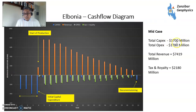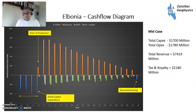So you have $1.7 billion CAPEX, $1.78 billion OPEX, $7.4 billion in revenue, and $2.1 billion in tax and royalty under this particular Elbonian fiscal system. We'll come to how that varies in a minute.